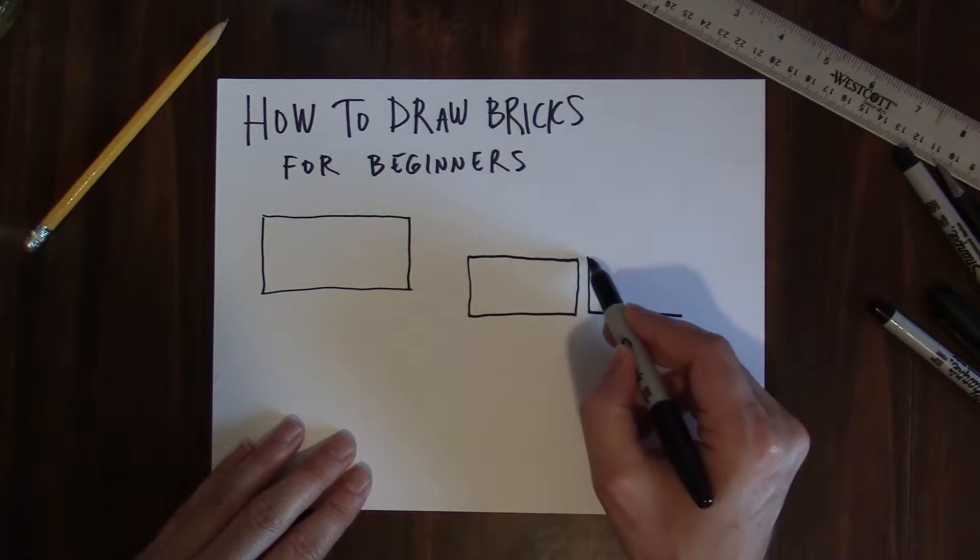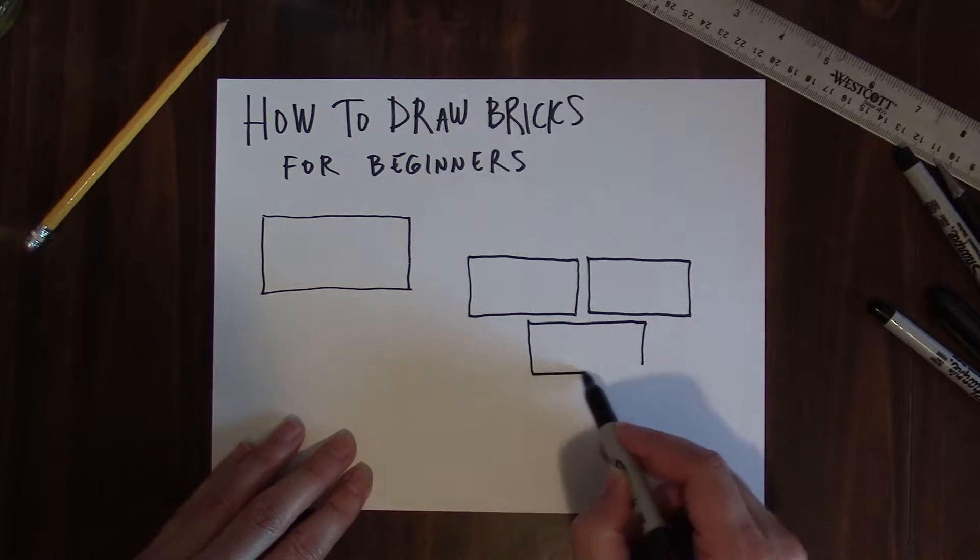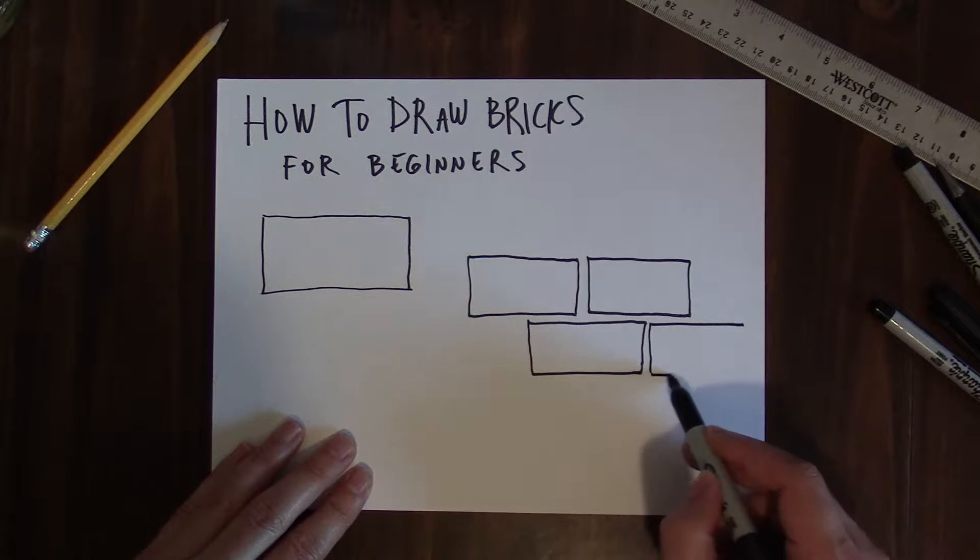When you draw the bricks close up to show a brick wall or a fireplace, the space in between the bricks represents the mortar joints.